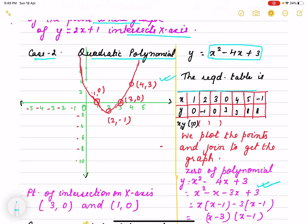We draw a table for different values of x. When x is 1, we find y is 0. When x is 2, y is minus 1. This way we put different values of x and find out the value of y for that x.